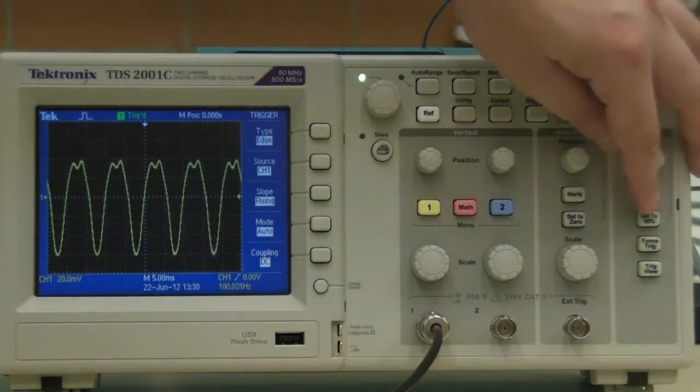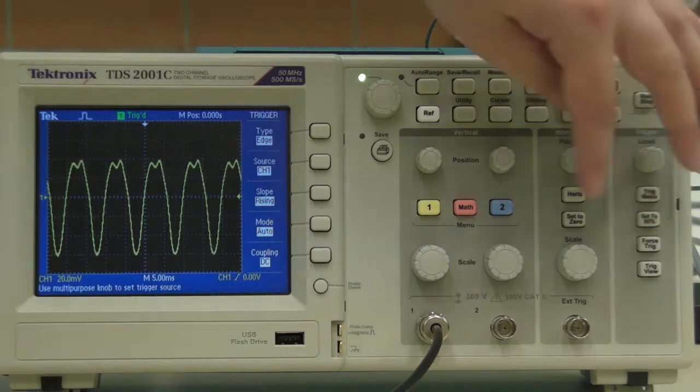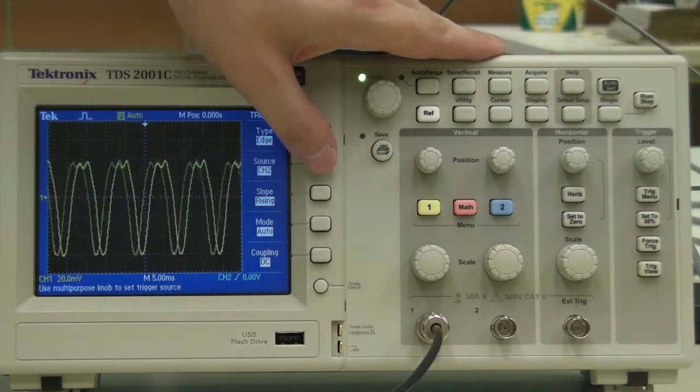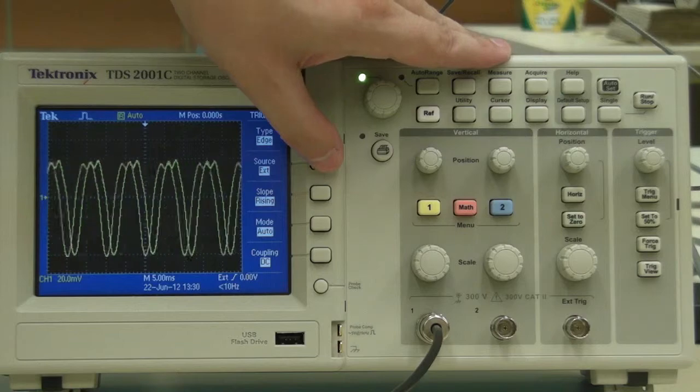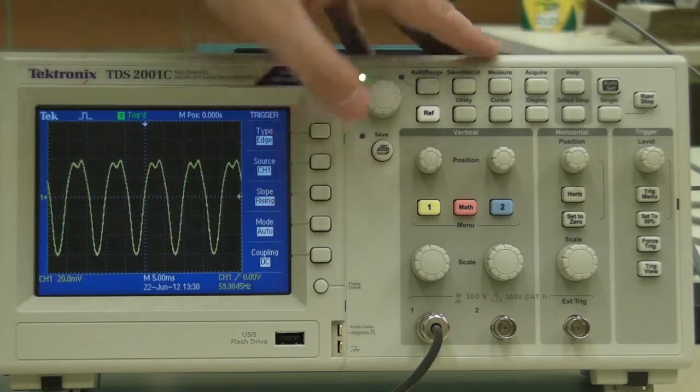If your signal doesn't appear as still as the one on screen, check the trigger menu and make sure that it's set to trigger off of channel 1. If it's set to trigger off anything else, the signal will appear to move horizontally.